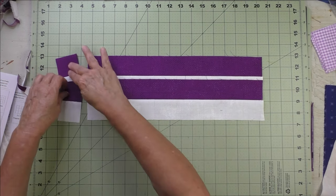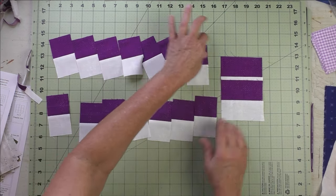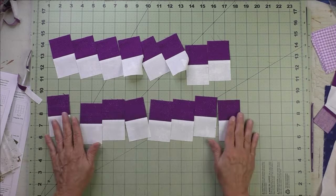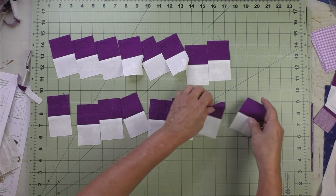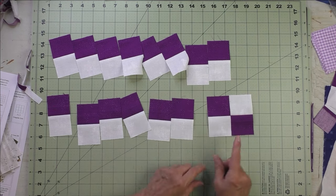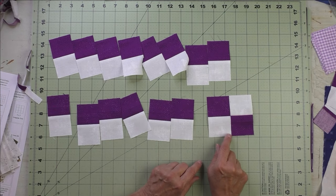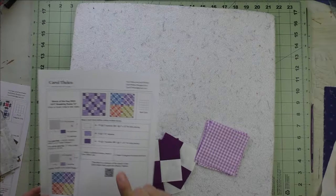Now we take off the selvage edges, and so now we have our 16 segments. We're going to take two of these and sew them together like this into a four patch, and then you'll have eight four patch units.